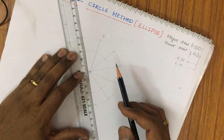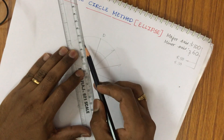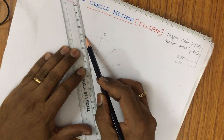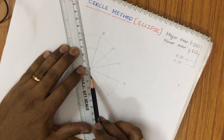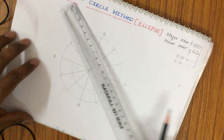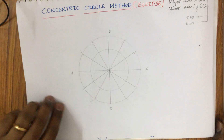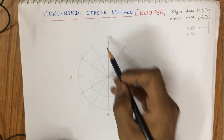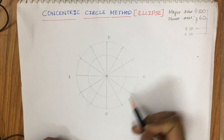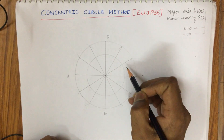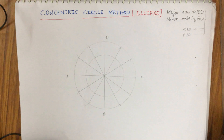This is all about how to work out the concentric circle method, dear students. Sometimes, other than the essentialistic method, they are going to ask this method also in the examination. This is the external circle and this is the internal circle.